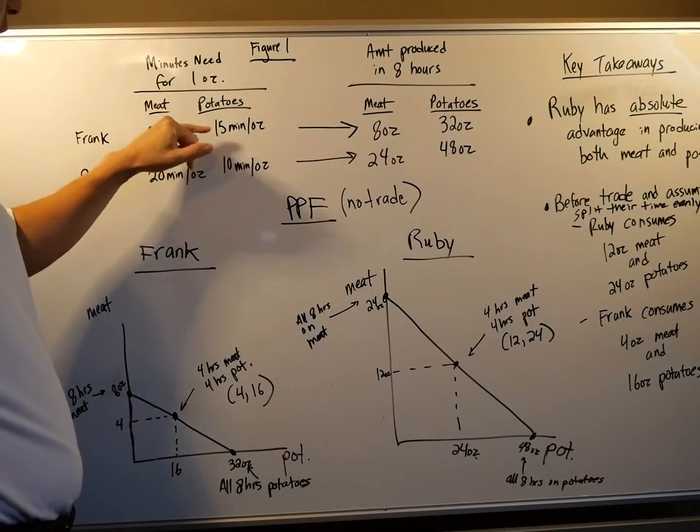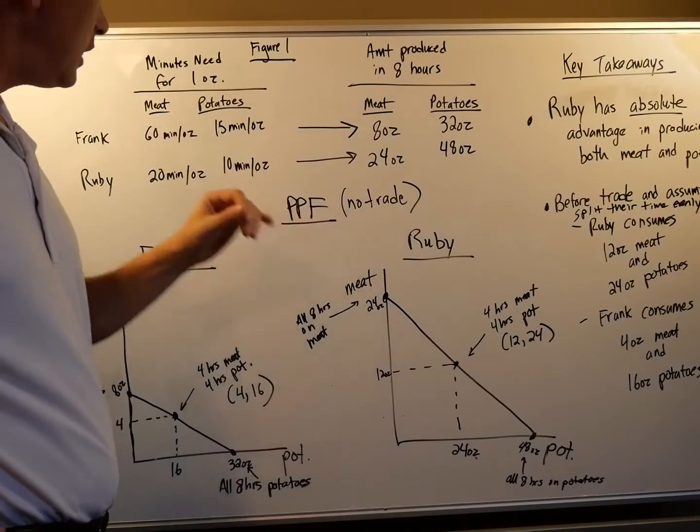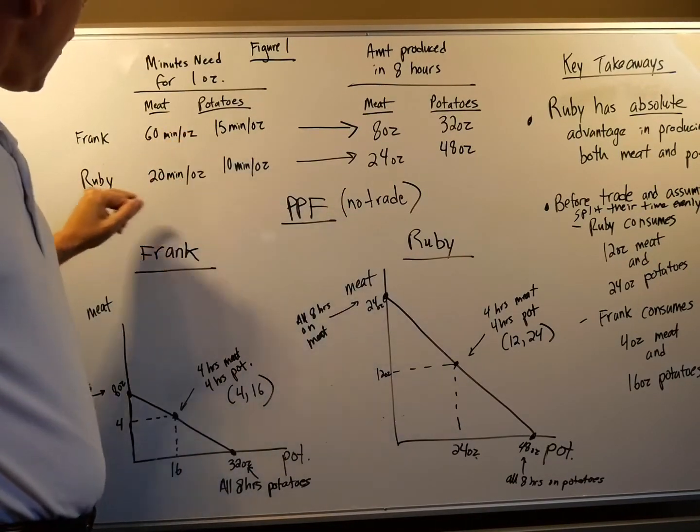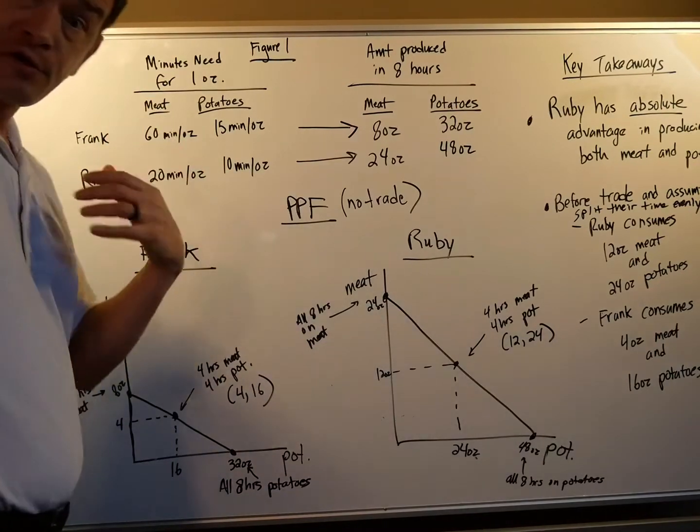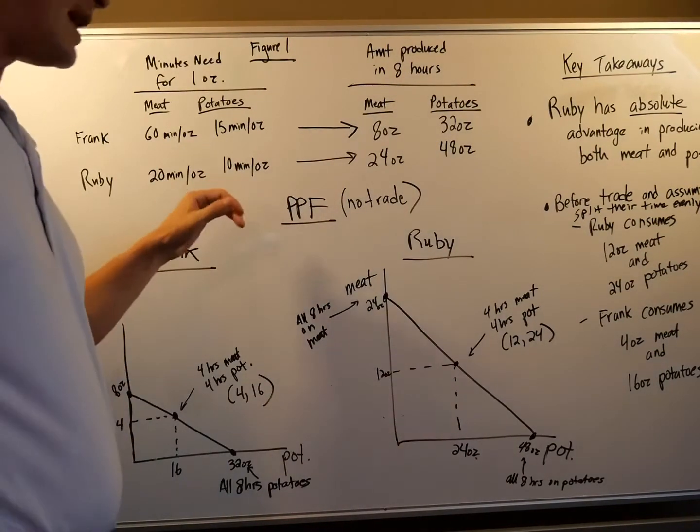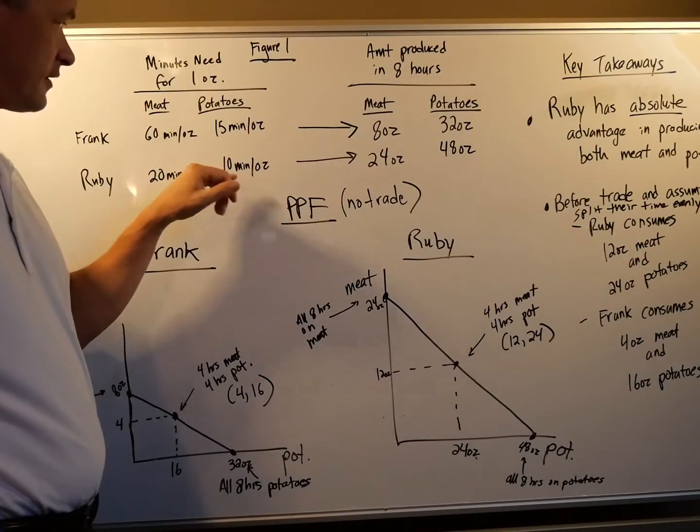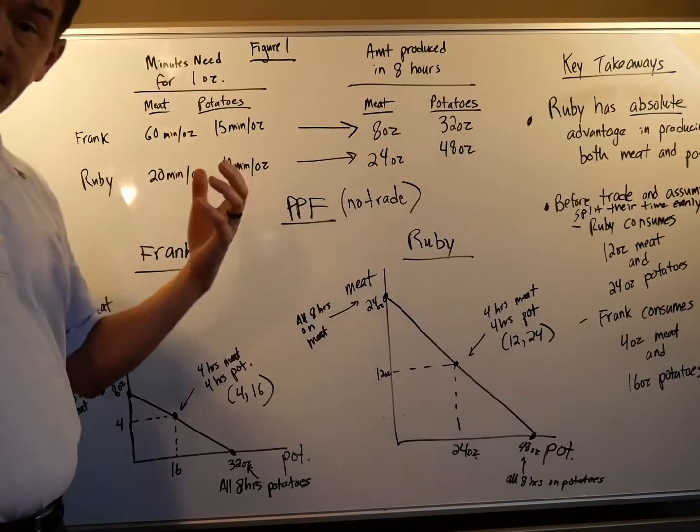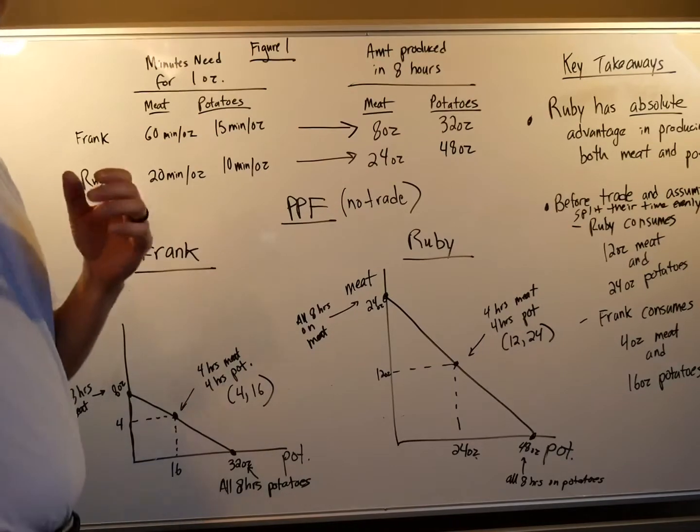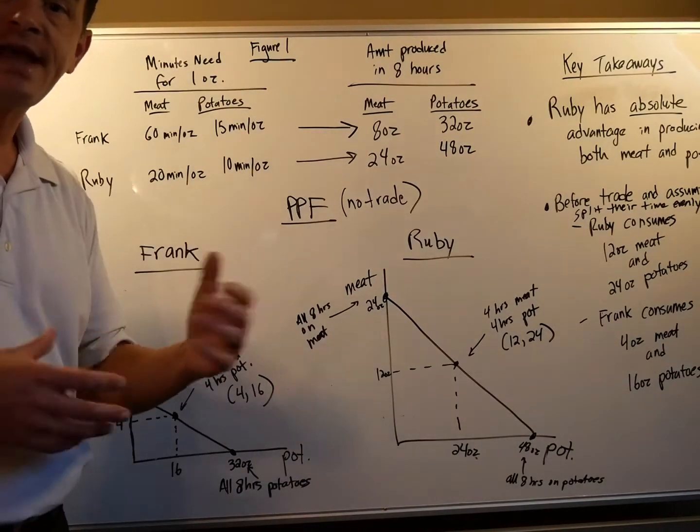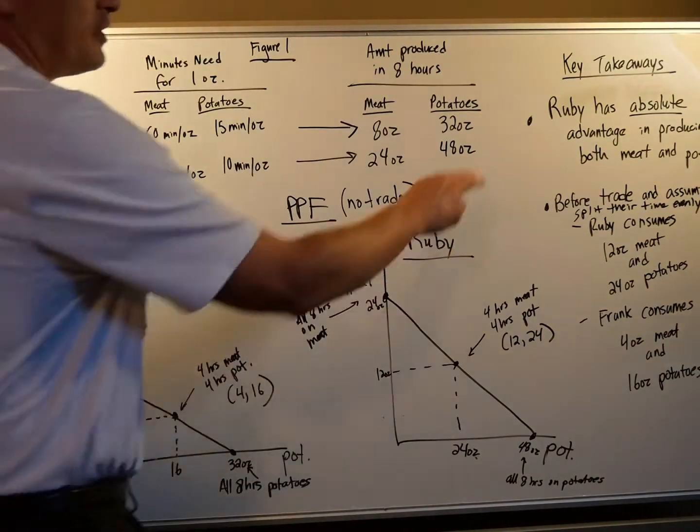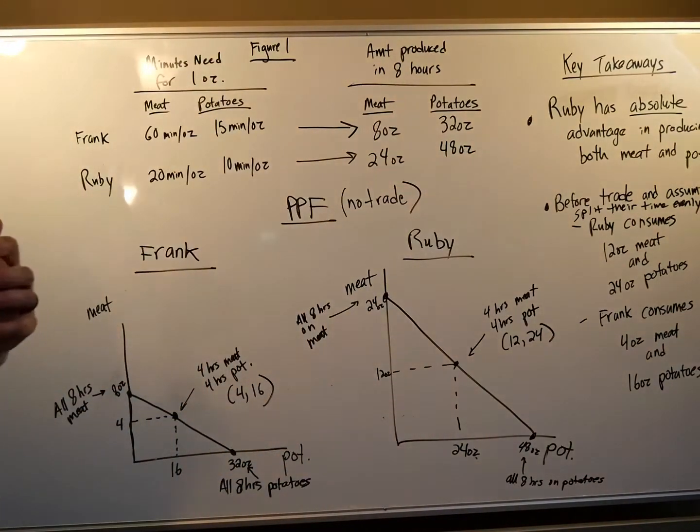For potatoes, it takes Frank four 15 minute blocks in an hour. He can make four ounces of potatoes in an hour. And Ruby can make six ounces in an hour. So she can make six and he can make four. So again, Ruby out produces Frank. So in actuality, Ruby has what we call absolute advantage in both producing meat and producing potatoes. So that's our first key takeaway.